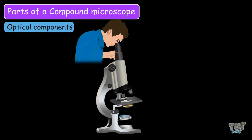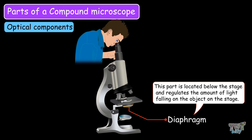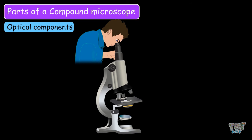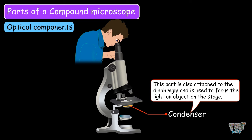Now let's learn the optical components of the compound microscope. The diaphragm is located below the stage and regulates the amount of light falling on the object on the stage. Remember, light falls on the object from below the stage through the hole in the center, and the object lies directly on that hole. The condenser is also attached to the diaphragm and is used to focus the light on the object on the stage.